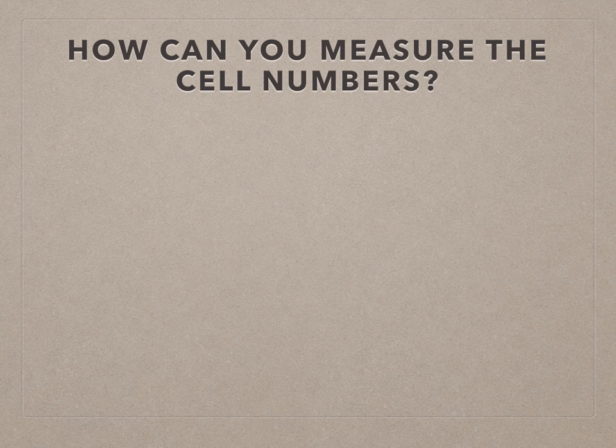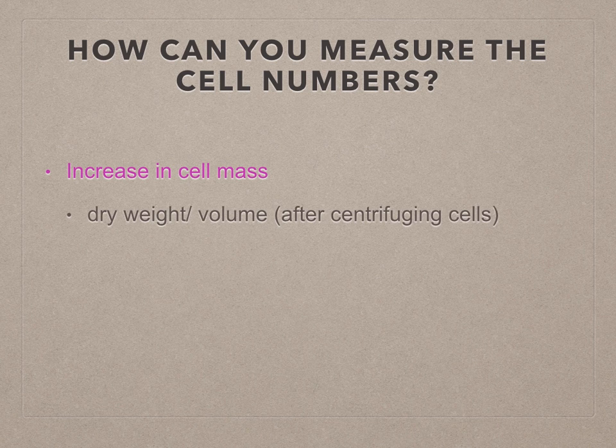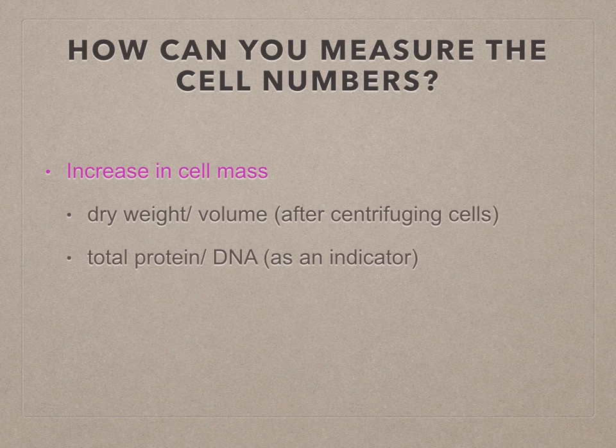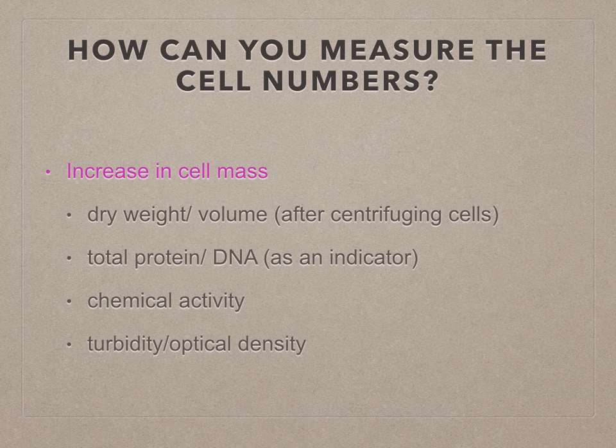Let's have a look at how you can measure the cell numbers. Cell numbers can be measured by the increase in cell mass, for example dry weight, volume after centrifuging the cells, total protein or DNA, chemical activity, or turbidity and optical density.